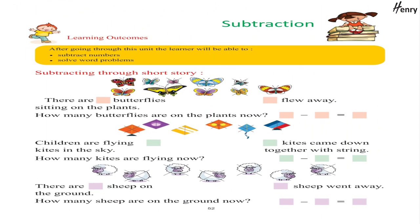Subtraction — Learning Outcomes: After going through this unit, the learner will be able to subtract numbers and solve word problems. Subtracting through short story: there are butterflies sitting on the plant — some flew away. How many butterflies are on the plant now?